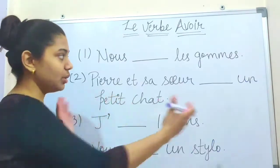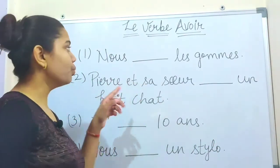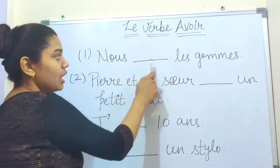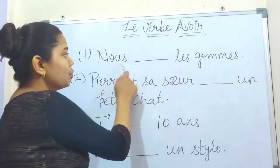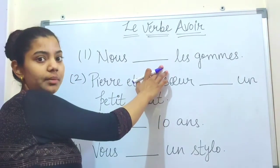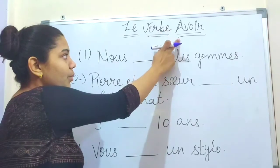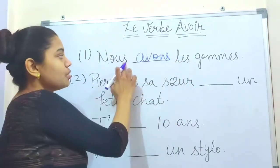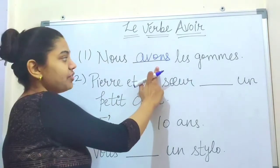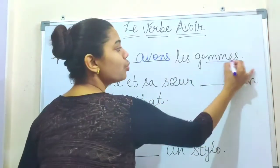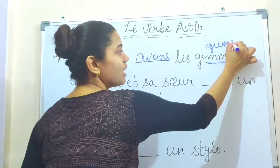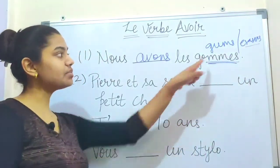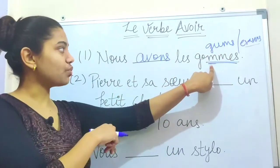Here we have an exercise — fill in the blanks using the verb avoir. The first sentence is: nous ___ les gommes. The conjugation of avoir with nous is avons, so the answer is: nous avons les gommes, which means 'we have the erasers.' The word gomme means both 'gum' and 'eraser.'